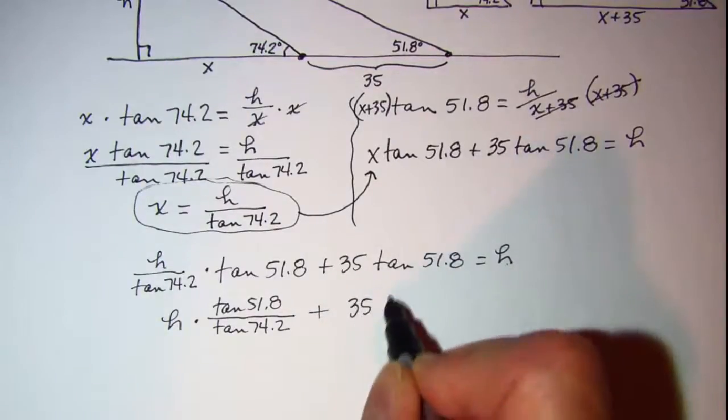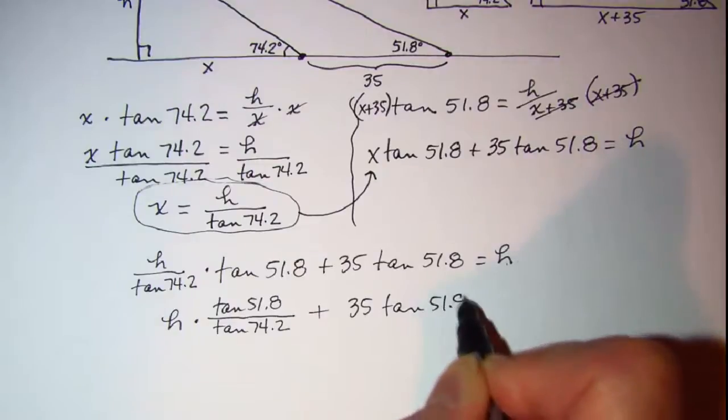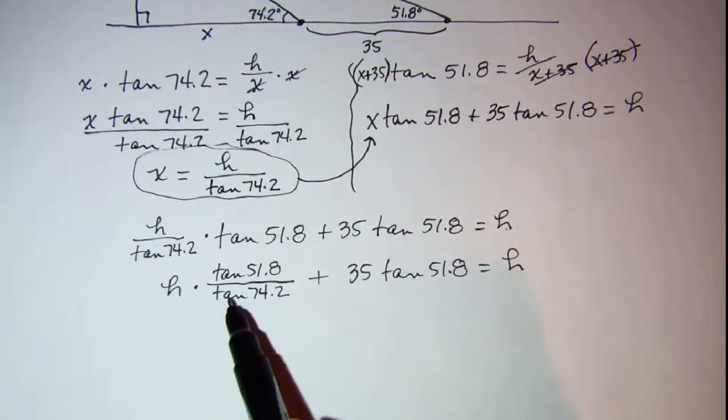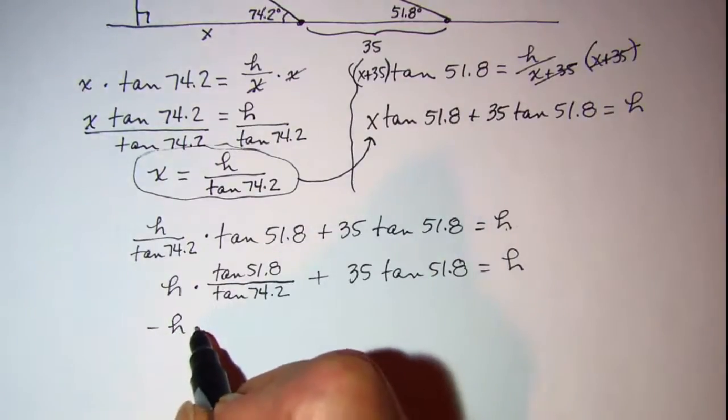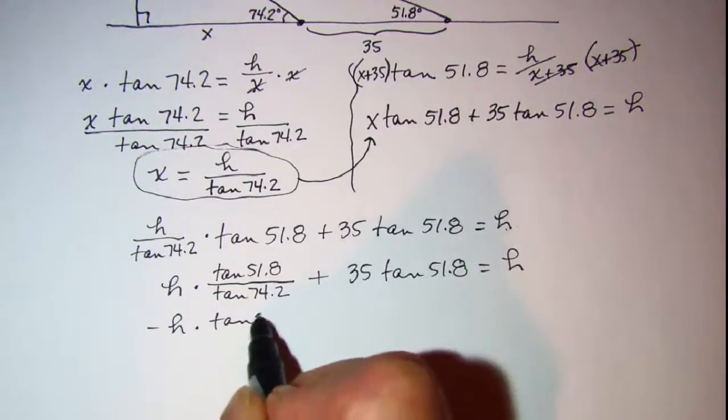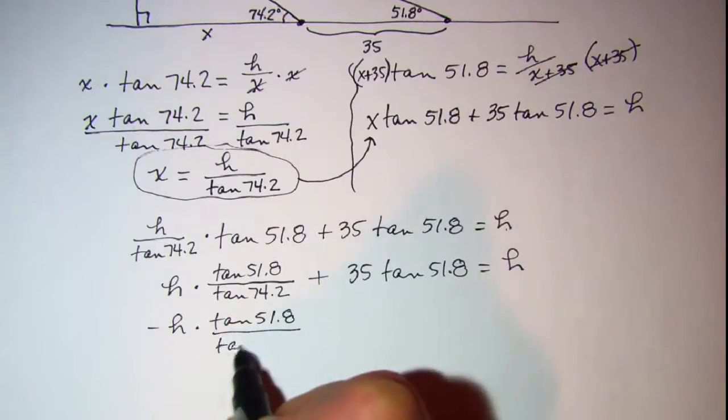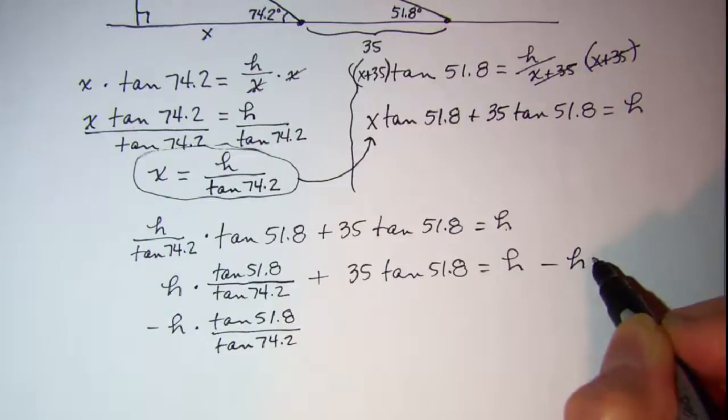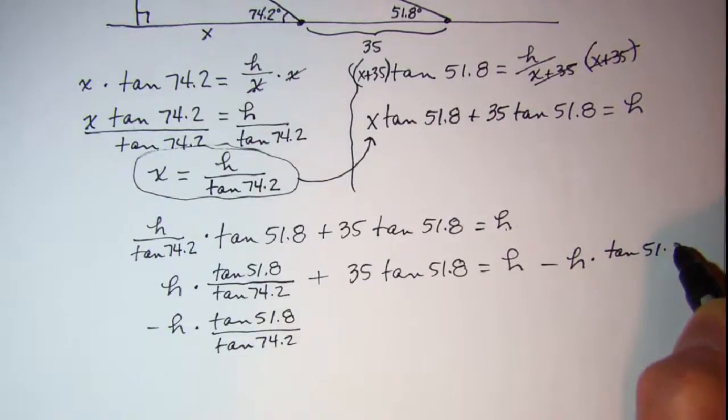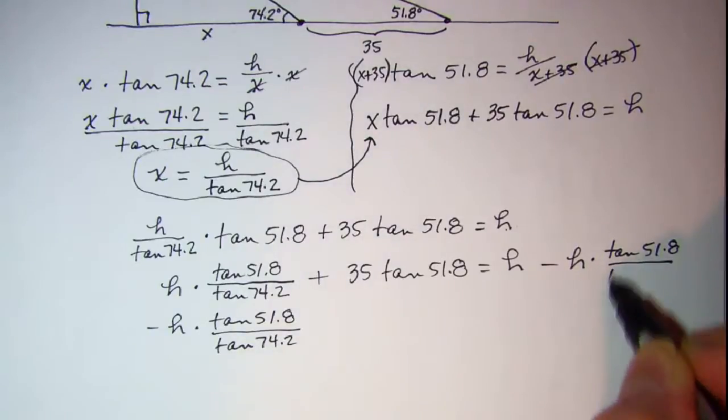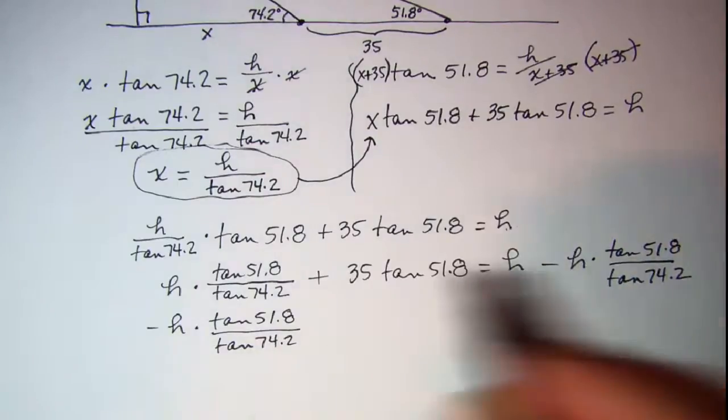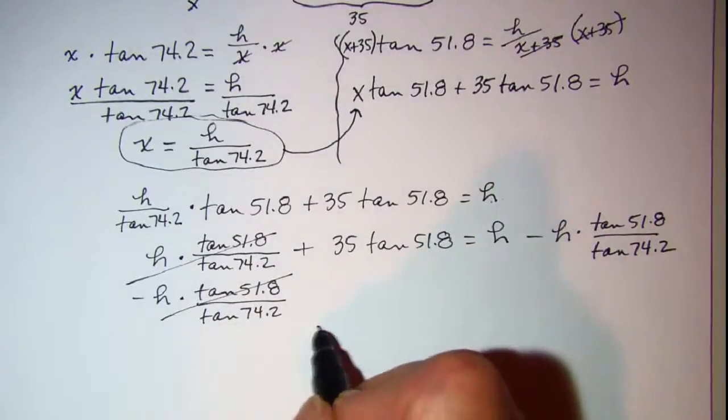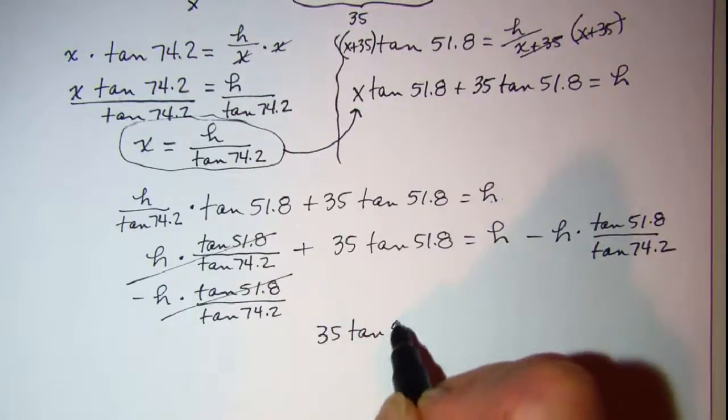So it will be tangent of 51.8 divided by tangent of 74.2, and that quotient is multiplied by H. Let me go ahead and copy the rest of this. And then to move this H term over to the other side, let's subtract. So these terms cancel.